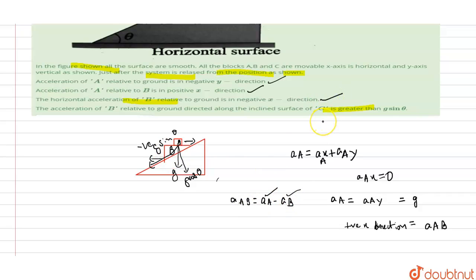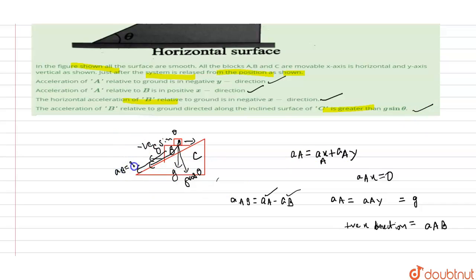And the last statement: acceleration of B relative to the ground directed along the inclined plane of C is greater than g sin θ. This statement is also correct because the component of acceleration of B, AB, is greater than g sin θ. Otherwise the block won't move. Since the block is moving, it is greater than or equal to g sin θ. So this statement is also correct.